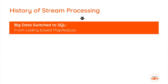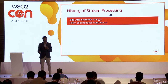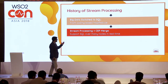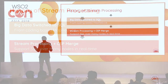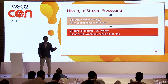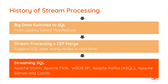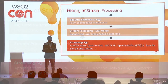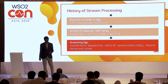Big data initially required writing everything in Java code using map and reduce, then moved to Hive QL — a more SQL-based approach. Stream processing followed the same path: stream processing and CEP merged and started supporting streaming SQL. Streaming SQL never had a true standard — it always adapts SQL-ish syntax. Apache Storm, Flink, WSO2 Stream Processor, Kafka SQL, and multiple other systems all now have streaming SQL-based interfaces, which makes life much easier.